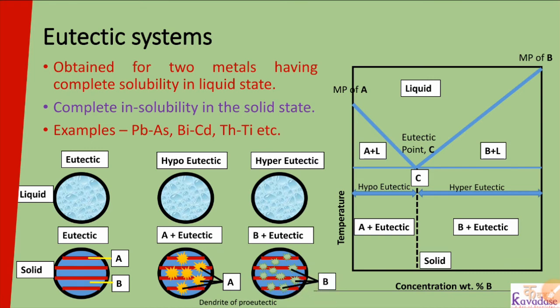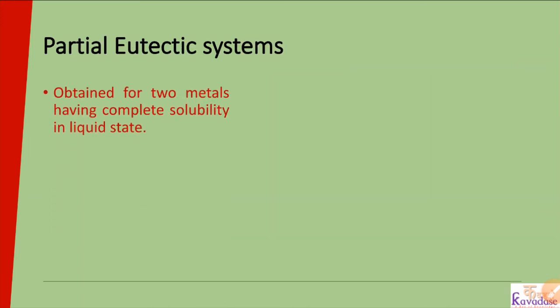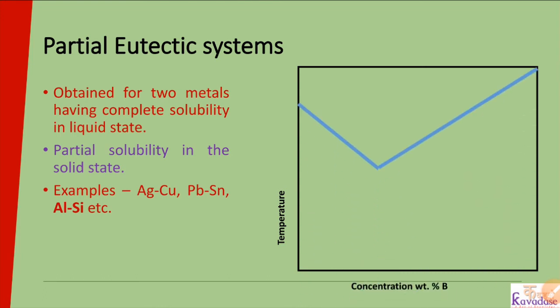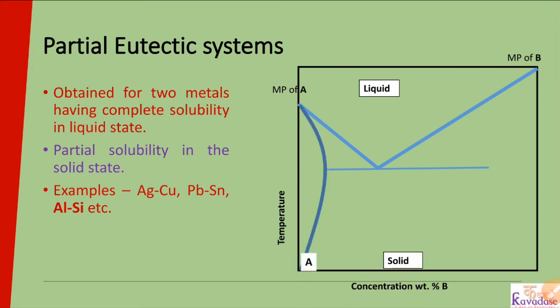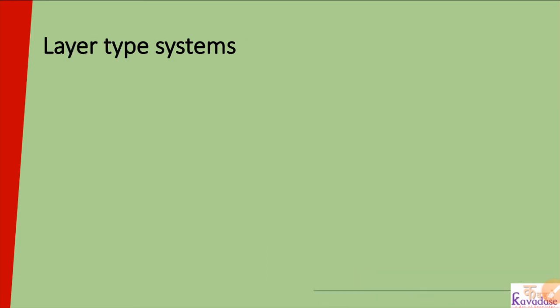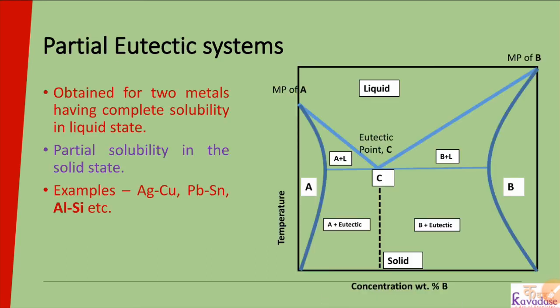In the hyper-eutectic region, you get dendrites of B and then layers of A plus B. These are the examples of the eutectic system. In the partial eutectic system, metals are completely soluble in liquid state and partially soluble in solid state, and we draw a temperature versus concentration diagram.